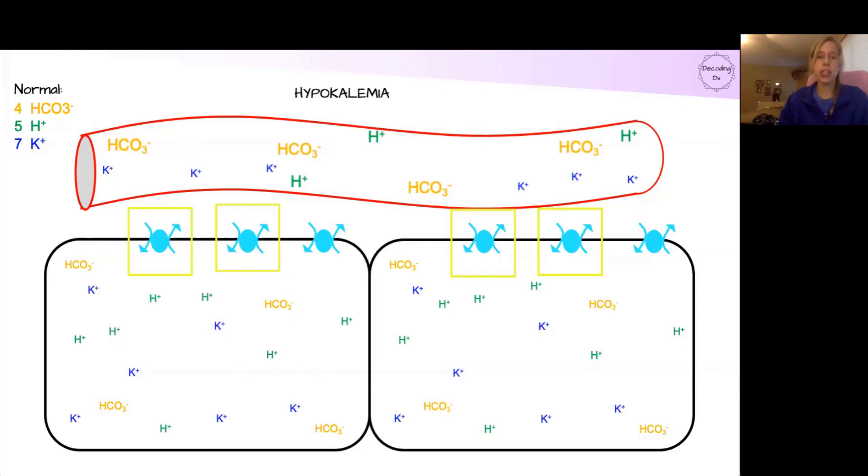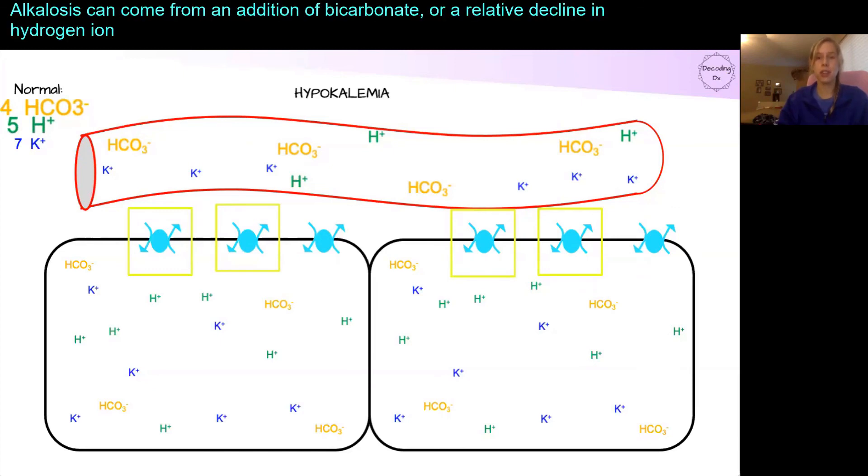When we compare this to the ratio of what we had in the normal state, we see that there's less hydrogen for the same amount of bicarbonate, which leads to the state of an alkalosis.